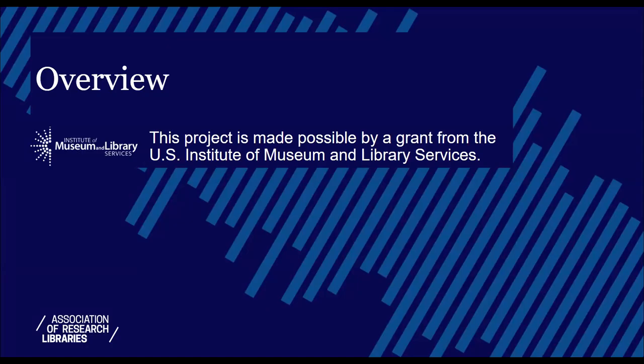Welcome to the overview of the Research and Assessment Cycle Toolkit offered by the Association of Research Libraries, made possible by a grant from the US Institute of Museum and Library Services. This presentation introduces the purpose and intent of the toolkit, reviews some basic definitions related to assessment, describes the stages of the assessment cycle, provides a brief overview of the five modules included in the toolkit, and closes with the impetus to focus library assessment on outcomes and impact.